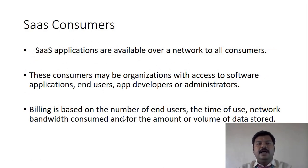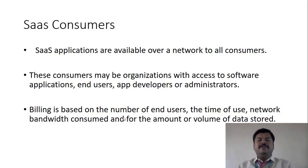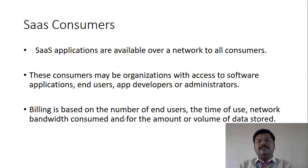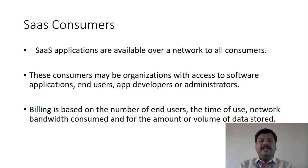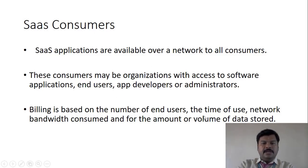The third option is software as a service, an application-layer service. SaaS is considered an end product — there is no need for testing, deployment, or development by the consumer. It is a completely developed software delivered by the provider for direct use. Billing for SaaS is based on the number of end users, time of use, network bandwidth consumed, and the volume of data stored.